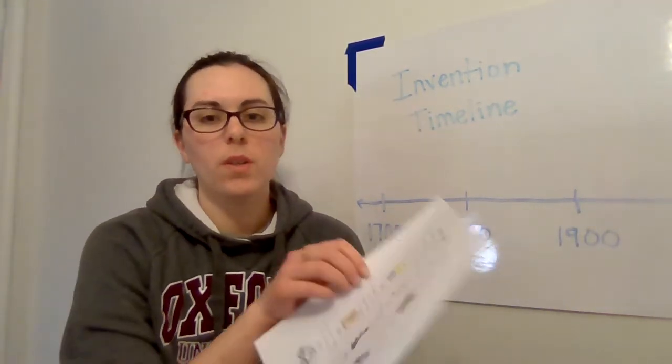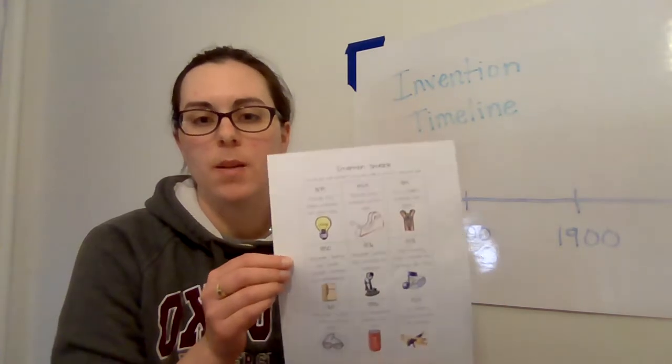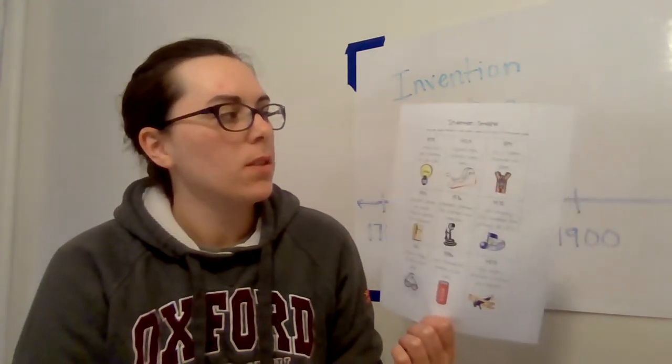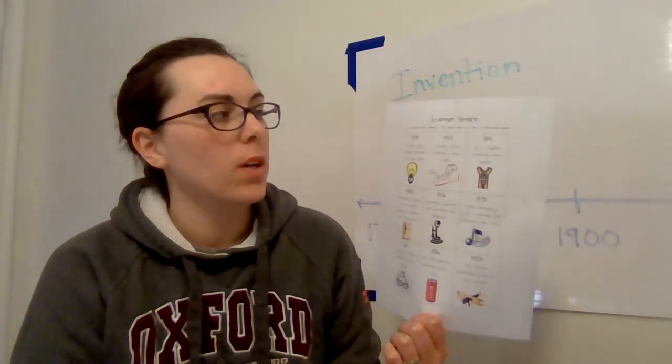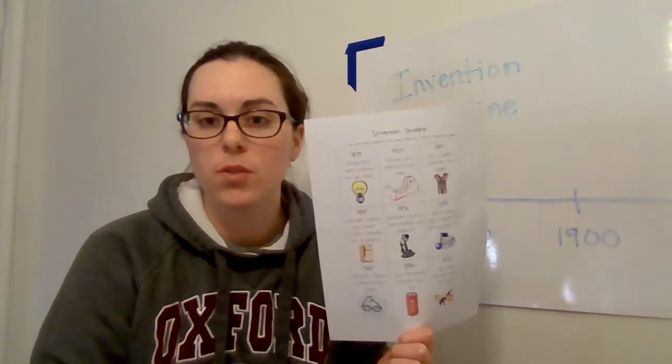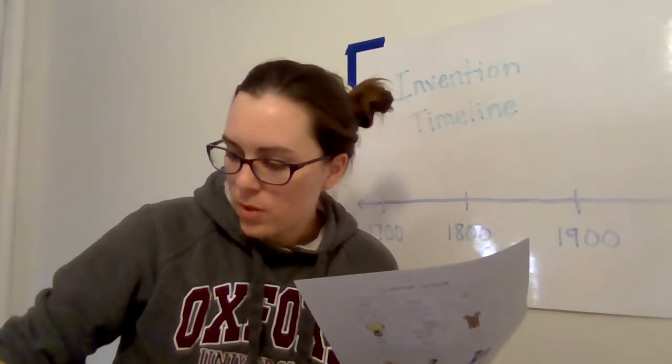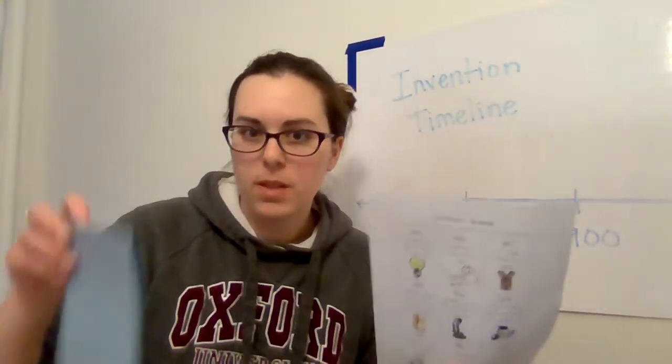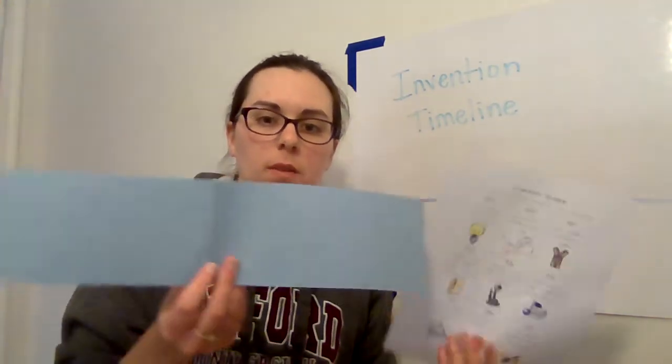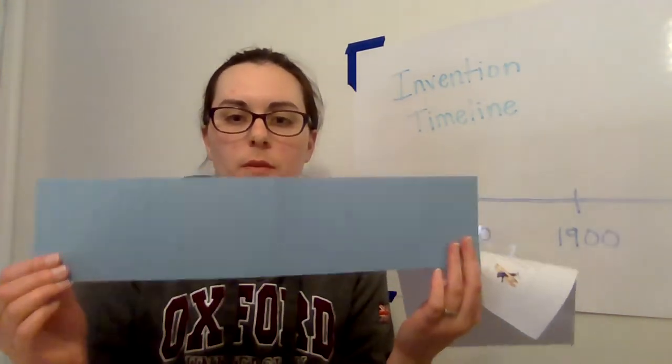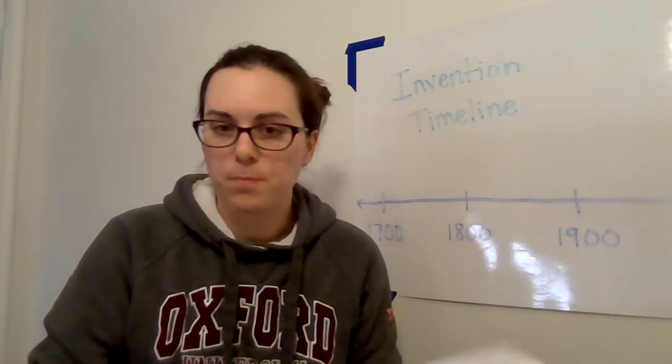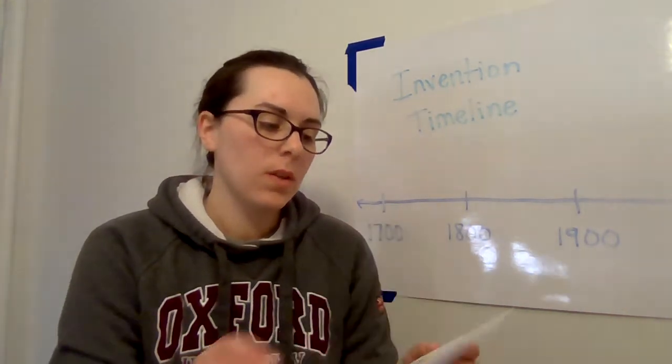For social studies today we will be making an invention timeline. It says cut and glue these inventions in the correct order on a strip of construction paper. The construction paper would have been stapled to the back of that. We can just take that off and open it up. Here's what the inventions are that you'll need to organize in order.